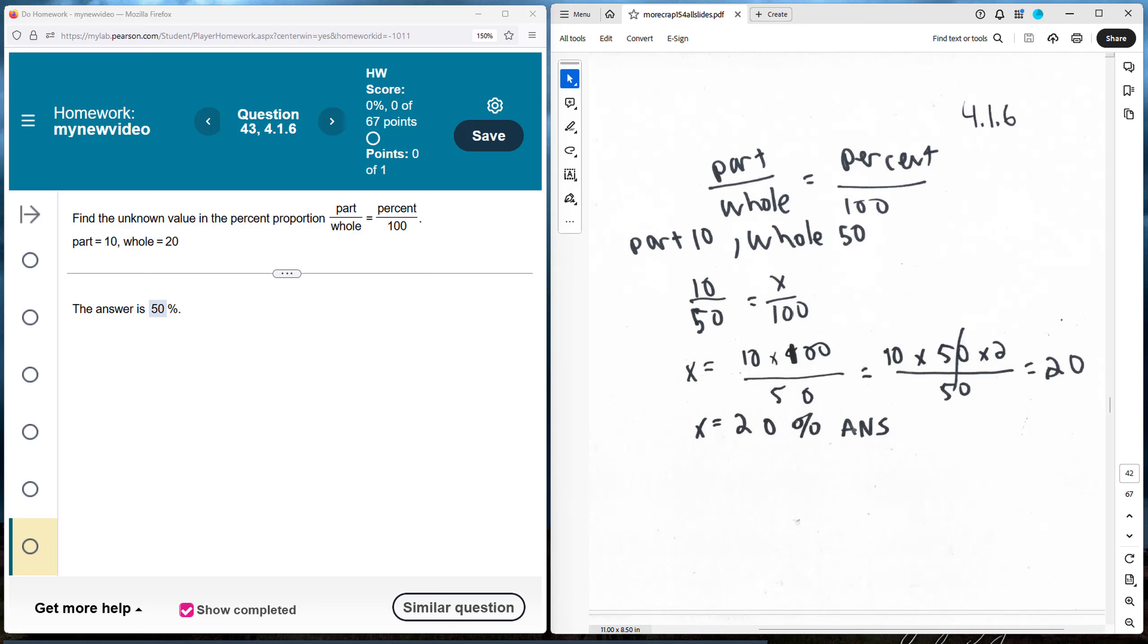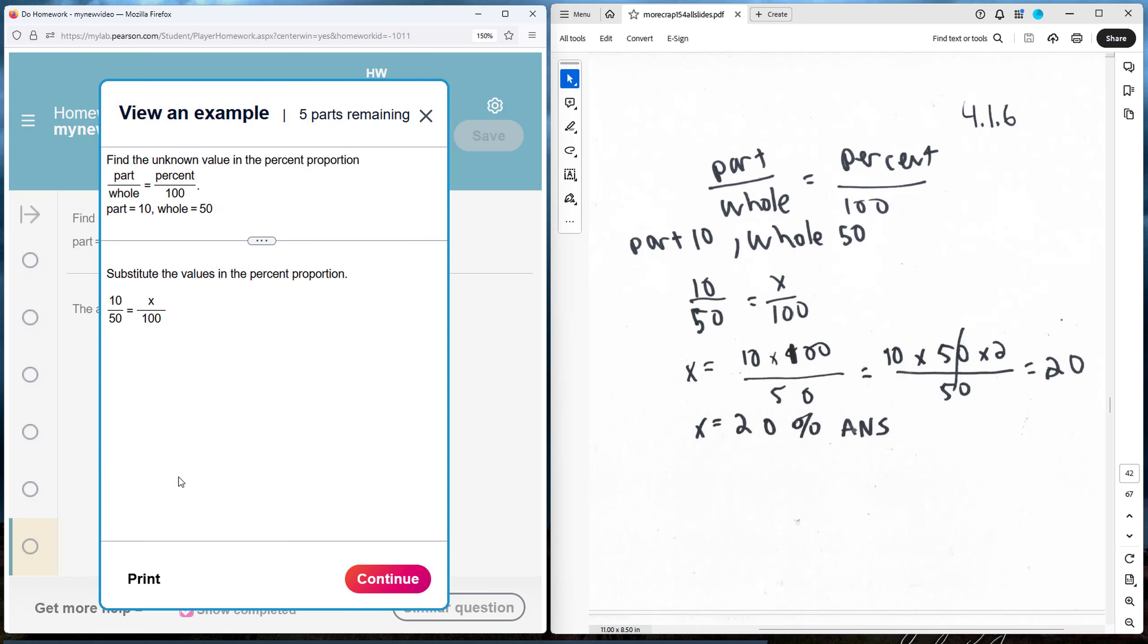Chapter 4, Section 1, Problem 6. Find the unknown value in the percent proportion.